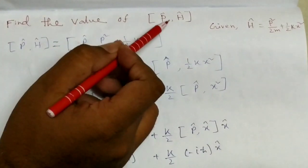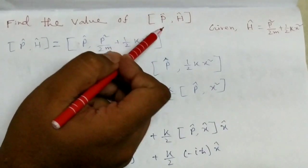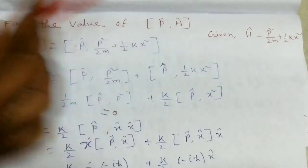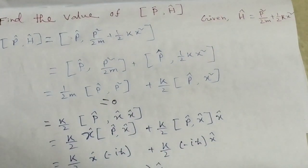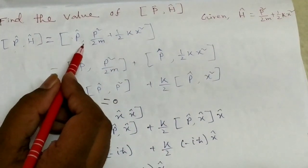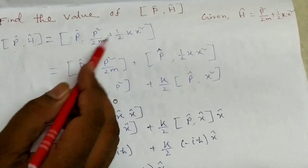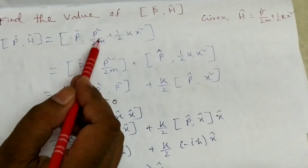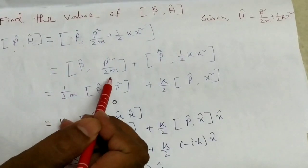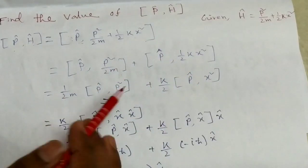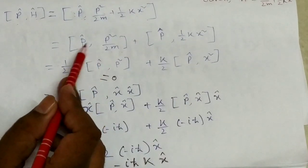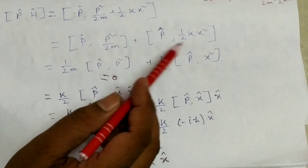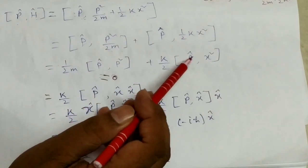Now we discuss an important problem: find the value of [p, H], where p is the momentum operator and H is the Hamiltonian, given H = p²/2m + (1/2)*k*x². We write [p, H] = [p, p²/2m + (1/2)*k*x²] and separate it as [p, p²/2m] + [p, (1/2)*k*x²]. The first term (1/2m)*[p, p²] = 0. For the second term, (k/2)*[p, x²].